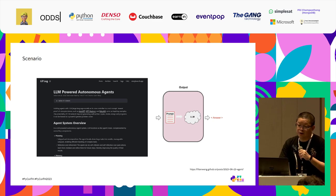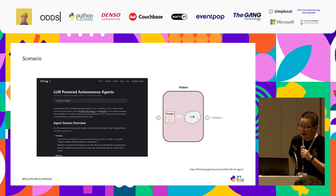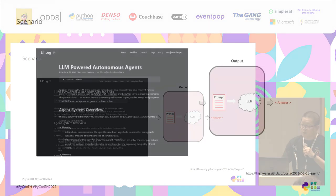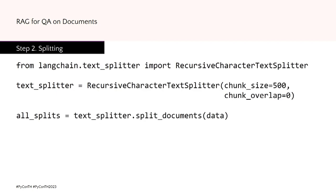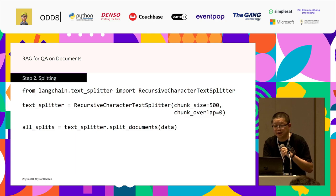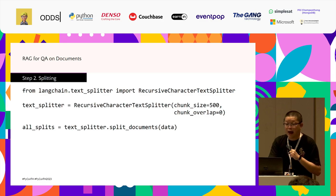Let's say we have a scenario: we want to build a QA application with knowledge loaded from the web — specifically loading an LLM blog using RAG technique. First, document loading: we can use a web-based loader to load content from the blog into a document. Step two, splitting: we split the document into smaller sizes, because most LLMs have a limitation on the number of input tokens. In this example, we use recursive character text splitter with a chunk size of 500 characters and no overlap.